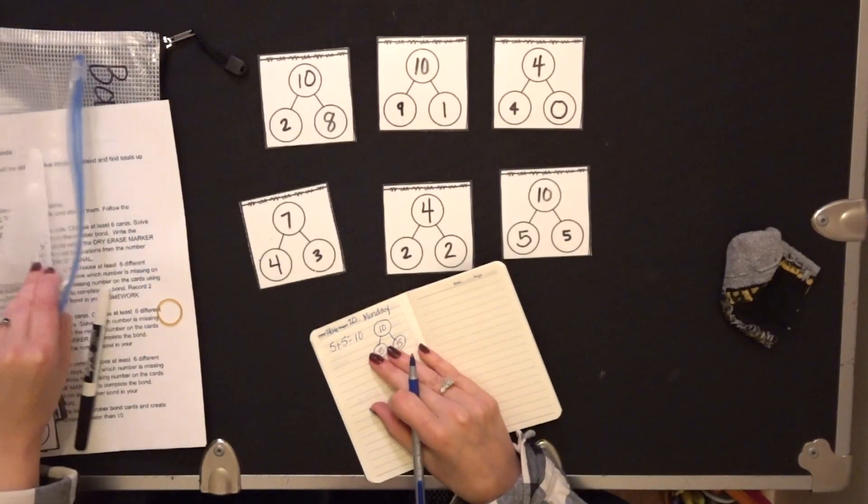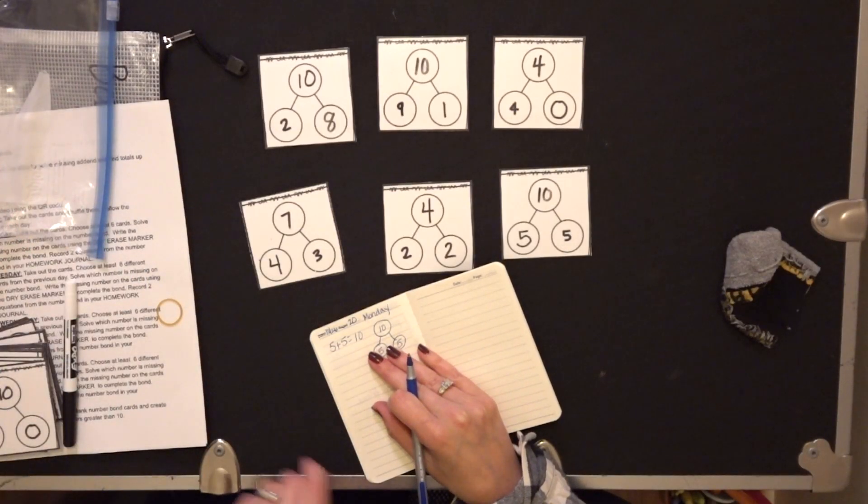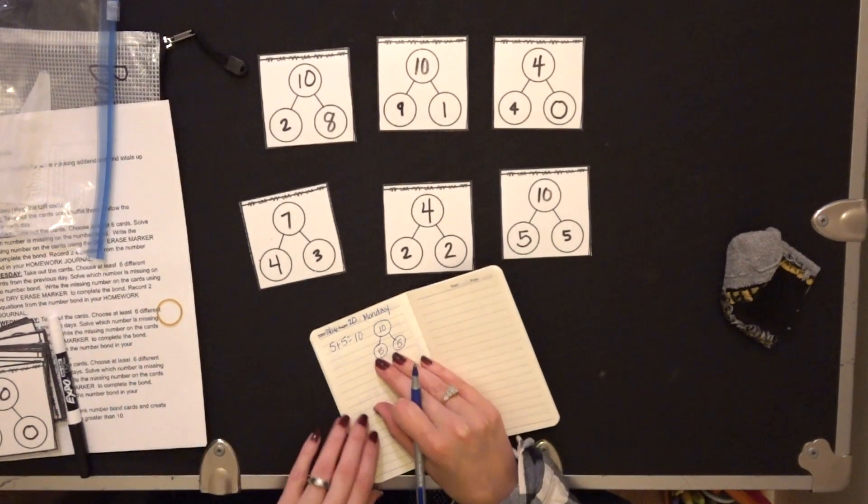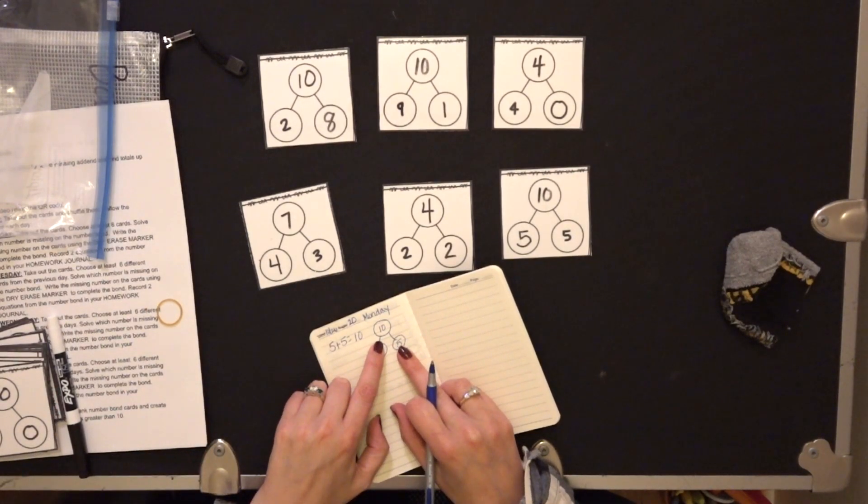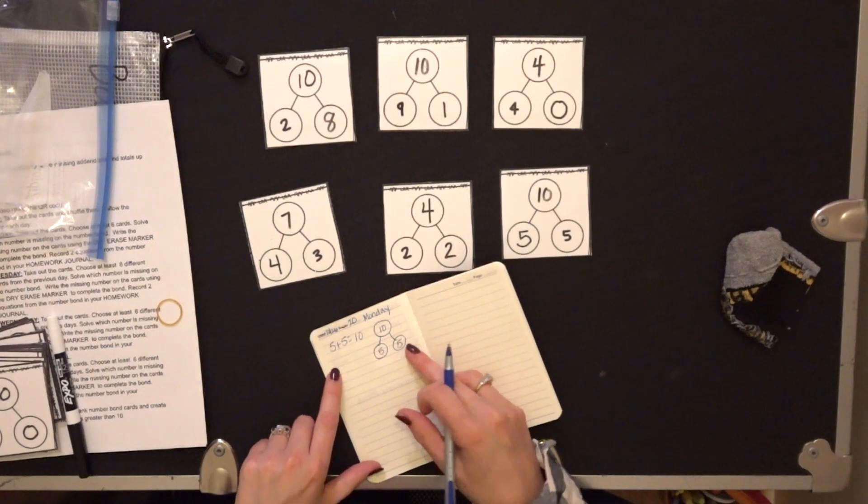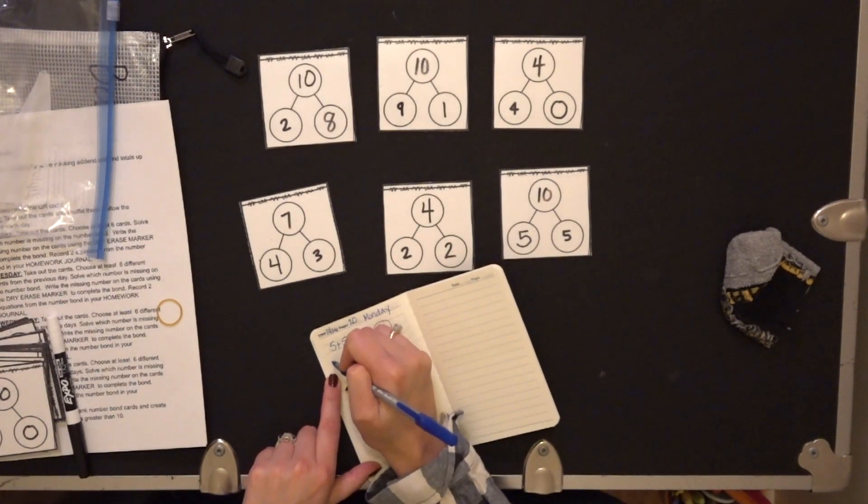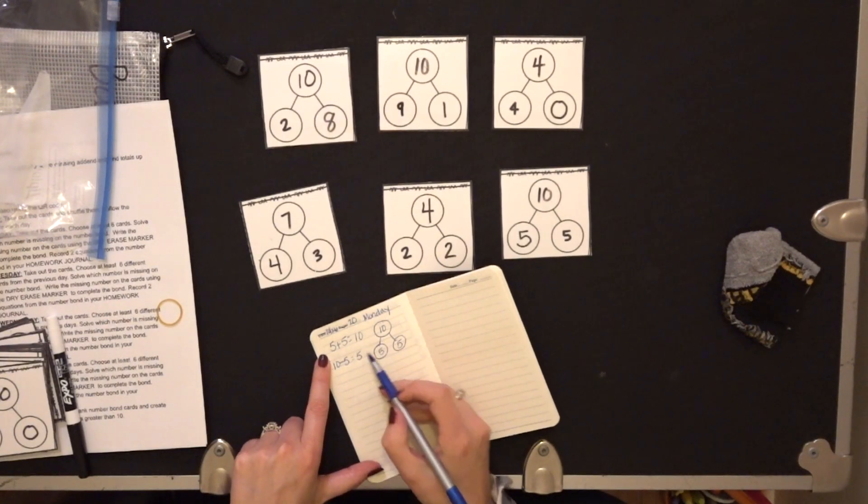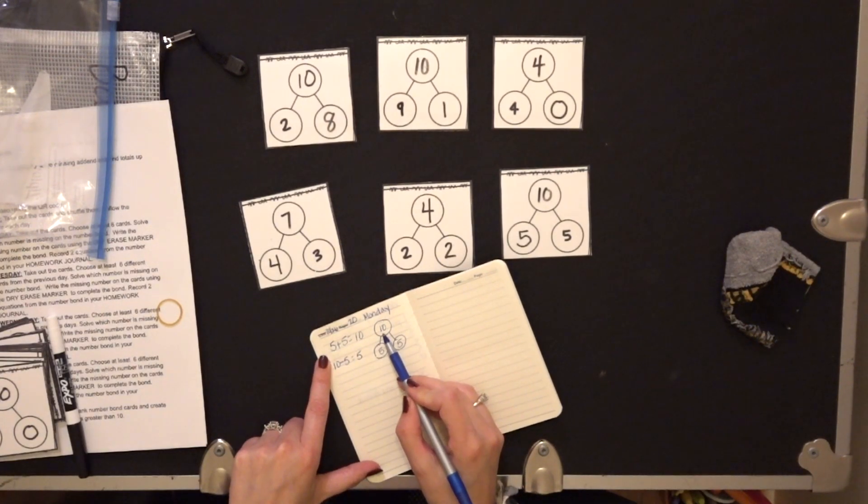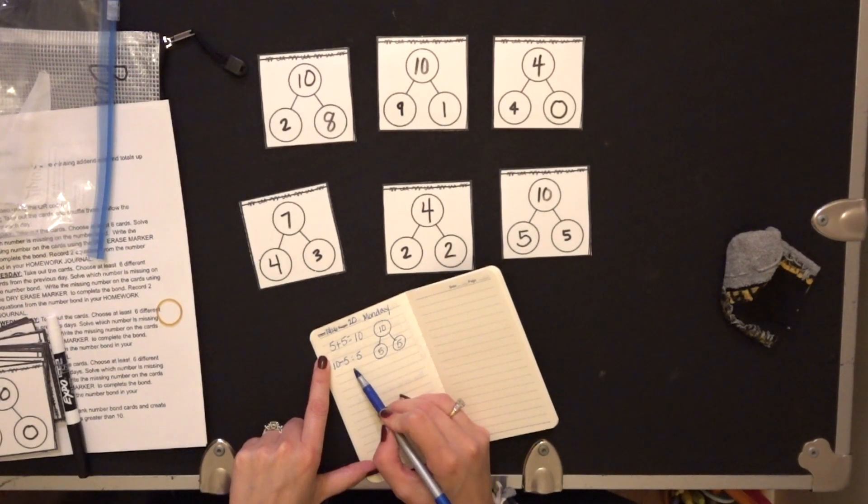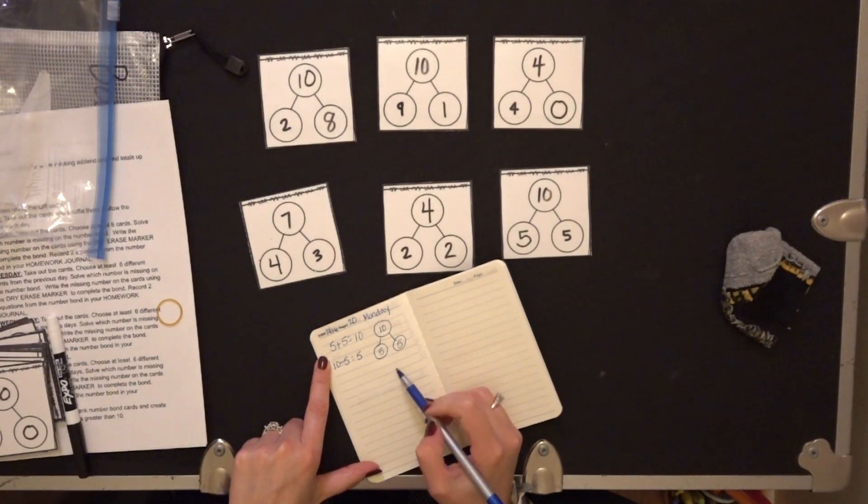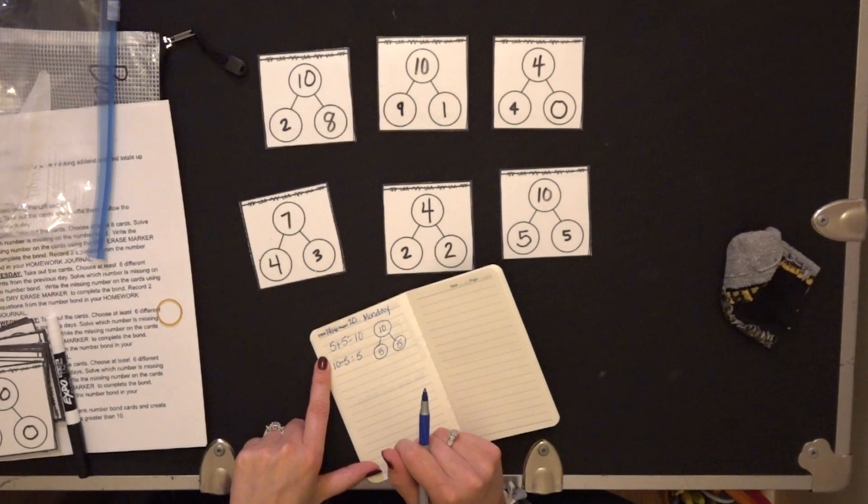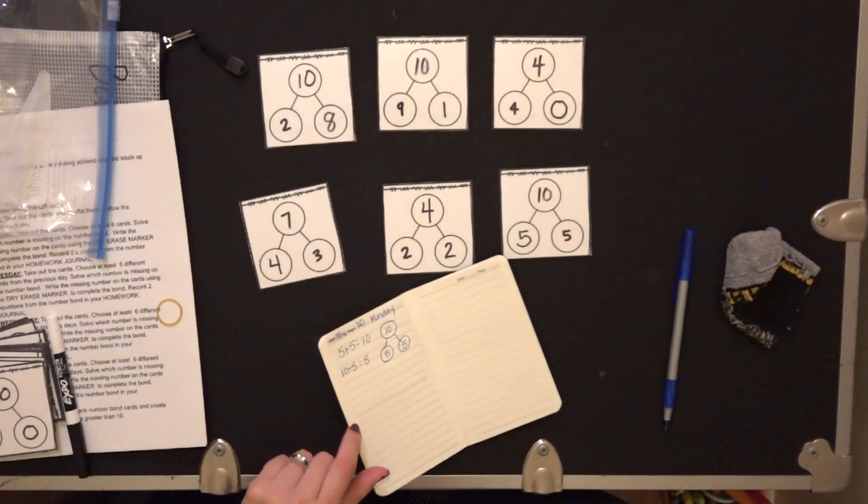Now I could also do the second equation, and I want you to try. So the second equation would be ten minus a part, which is five, equals five. So every time you're going to do two equations, the plus and the minus, for at least two number bonds. At least two of them.